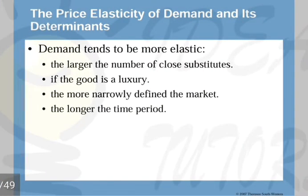Demand tends to be more elastic when a larger number of close substitutes are available. If a good has more competitive alternatives in the market, the elasticity is higher because if there is a small increase in price, the consumer will quickly shift to other substitutes. For example, if petrol is getting costlier and diesel is a good alternative, people will switch to diesel. So if more substitutes are available, elasticity of the good is higher.